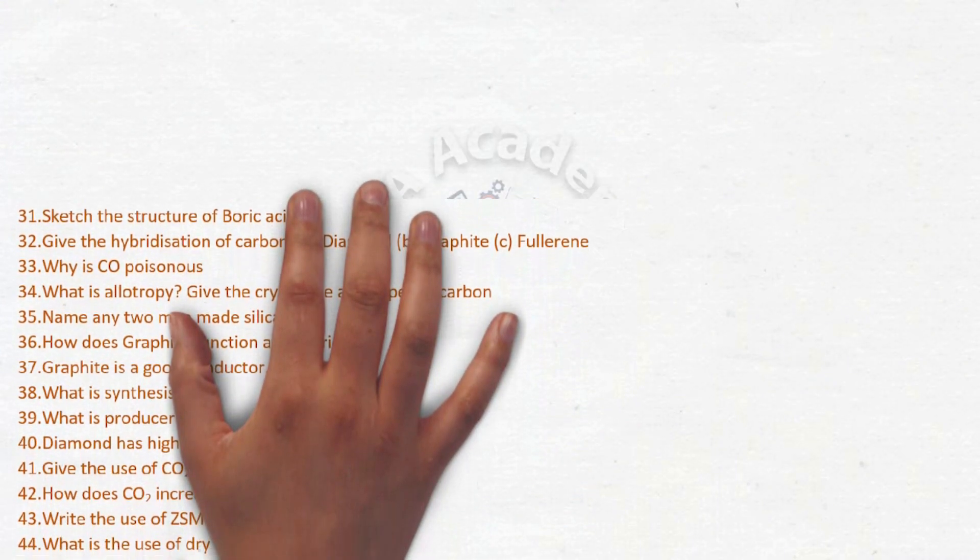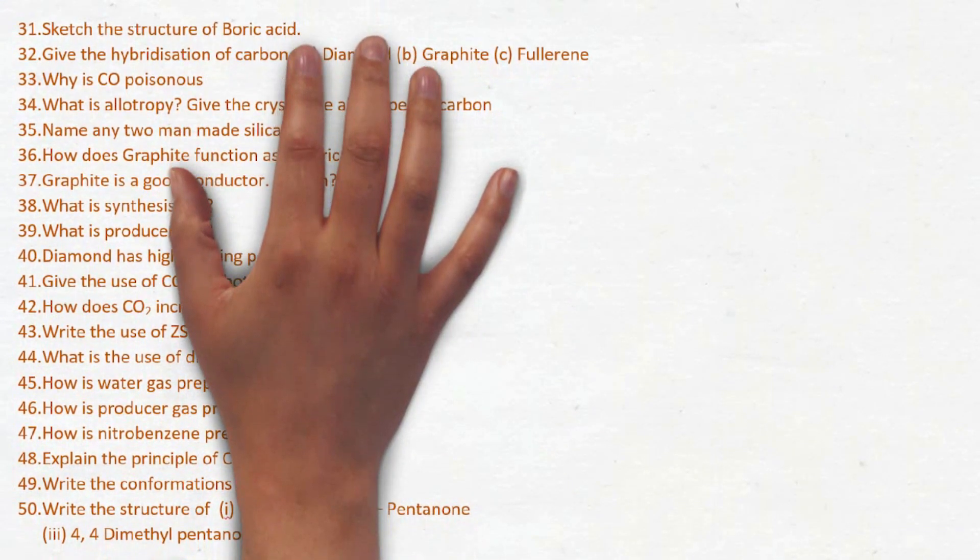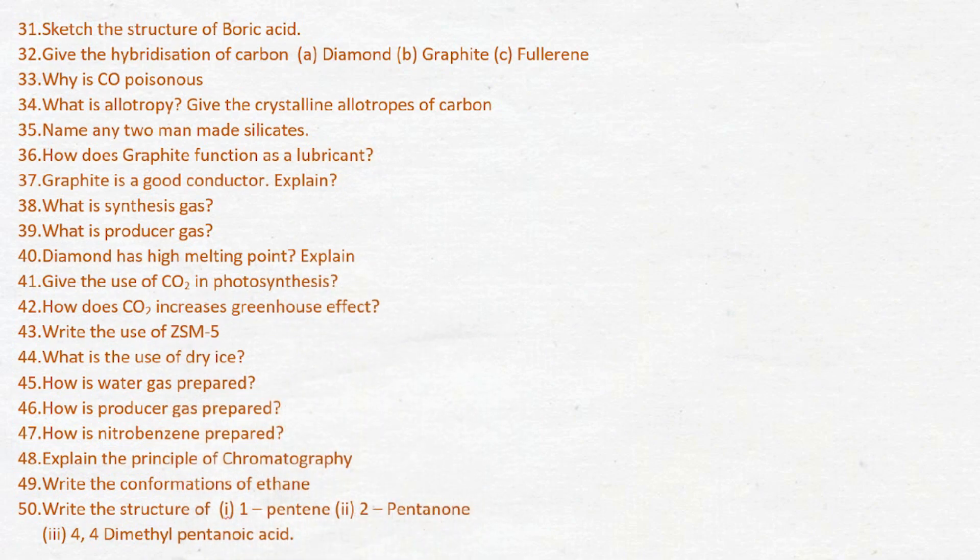Next is thirty-first, sketch the structure of boric acid. Thirty-second one is give the hybridization of carbon, diamond, graphite and fullerene C60. Thirty-third, why is CO poisonous? Thirty-fourth is allotropy. Thirty-fifth is name two man-made silicates. Thirty-sixth, graphite functions as a lubricant. Thirty-seventh, graphite is a good conductor.